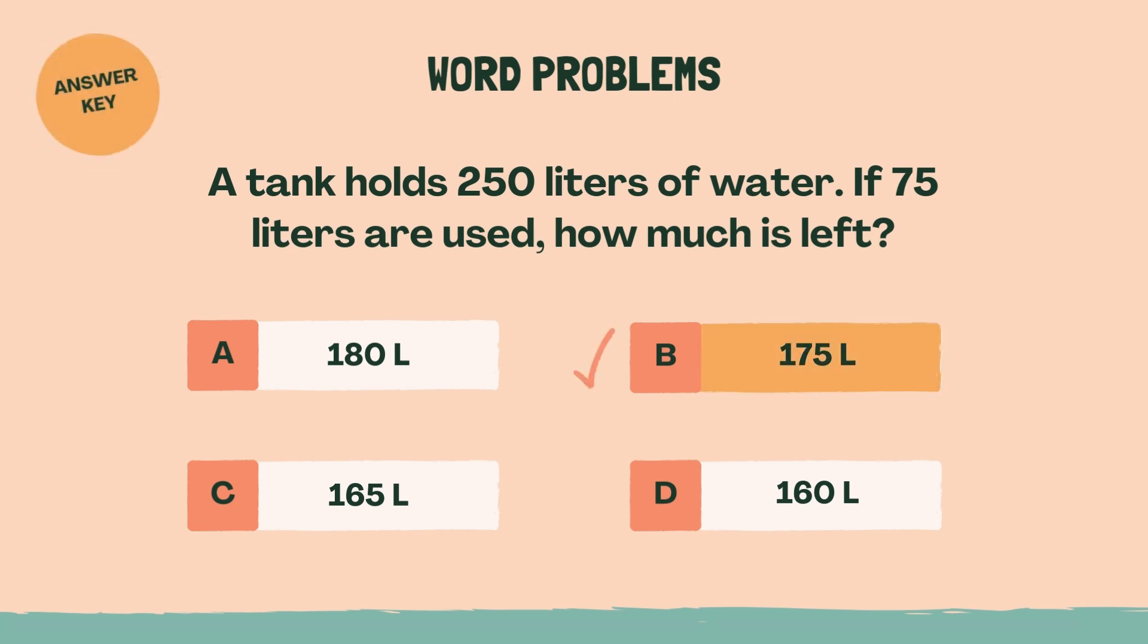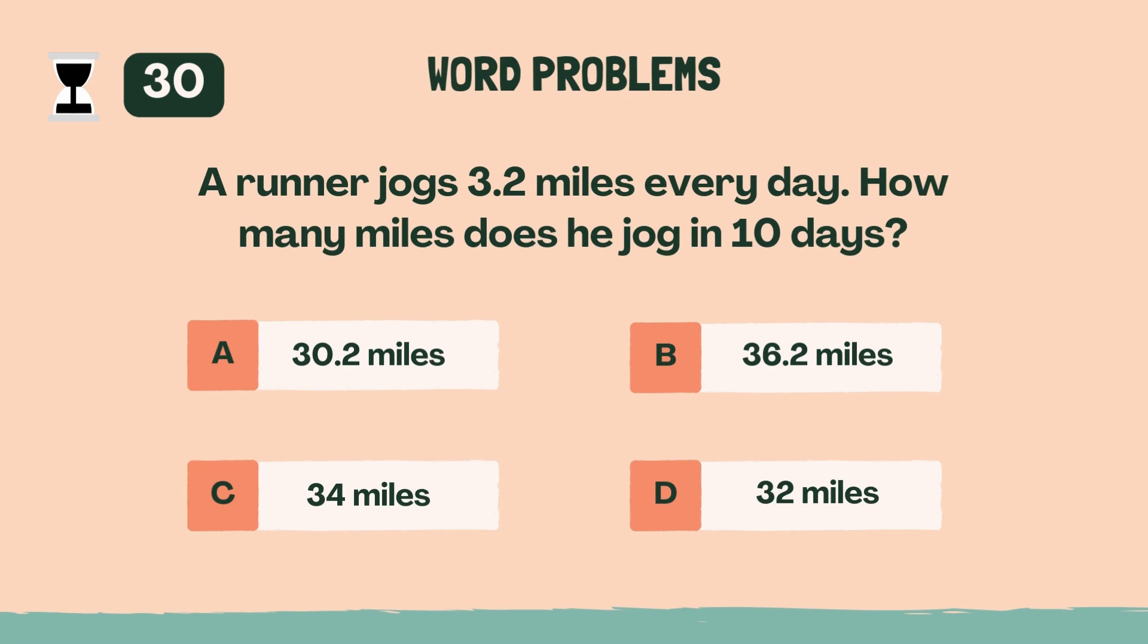A tank holds 250 liters of water. If 75 liters are used, how much is left? B, 175 liters.